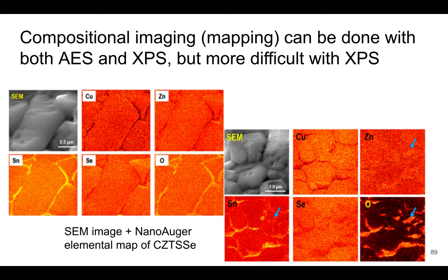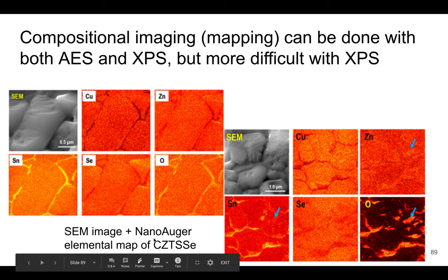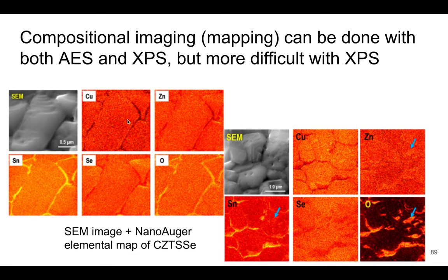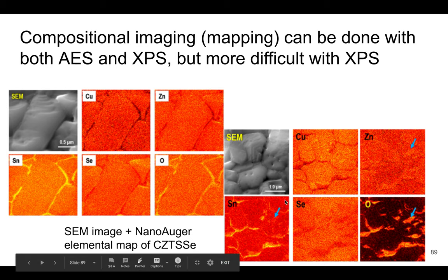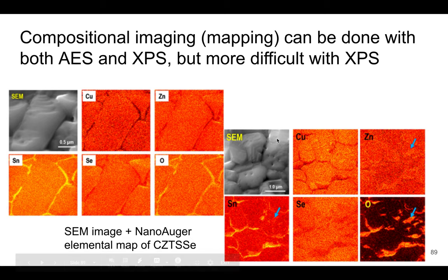It is a lot more difficult with XPS, so that's one thing to keep in mind. This is actually an example of an SEM image, but then they have basically an AES elemental map. You can see the SEM image and then all the different elements — copper is everywhere, zinc, and then tin seems to be at the boundaries, same thing with oxygen. You can see different issues with a similar material over here, so we can get where the elements are actually appearing on the sample, not just bulk information about the entire image.